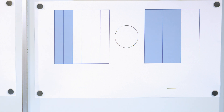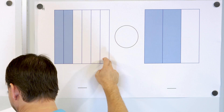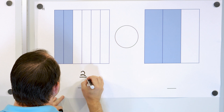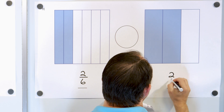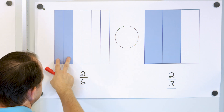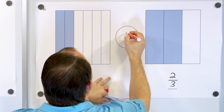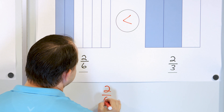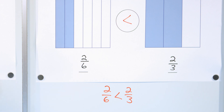What about the next one? We have 1, 2, 3, 4, 5, 6 — and we have 2 out of 6 pieces, so we write this as 2 sixths. And this is 1, 2 out of 3 pieces — 2 thirds. This one is smaller than this one, so the arrow is going to point towards 2 sixths. We say the fraction 2 sixths is less than the fraction 2 thirds.